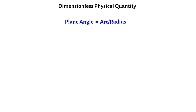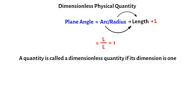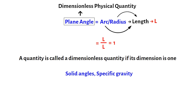Dimensionless physical quantities. Some physical quantities are expressed as the ratio of two equivalent physical quantities. For example, plane angle is equal to arc divided by radius. Here, both arc and radius refer to length, so both dimensions are L. That is, the dimension of plane angle is L/L or 1. A quantity is called a dimensionless quantity if its dimension is 1. So plane angle is a dimensionless quantity. Like plane angles, solid angles, specific gravity, etc., are also dimensionless quantities.